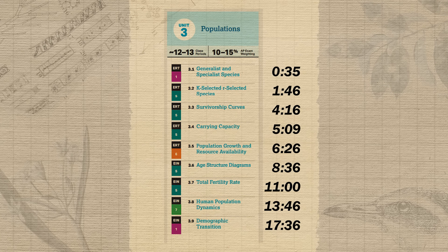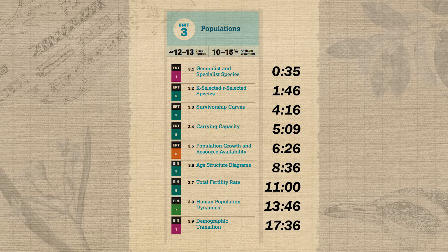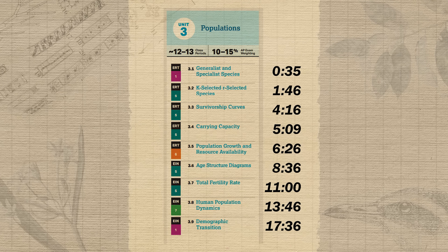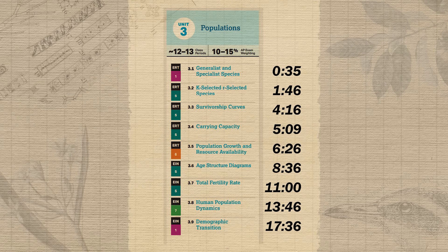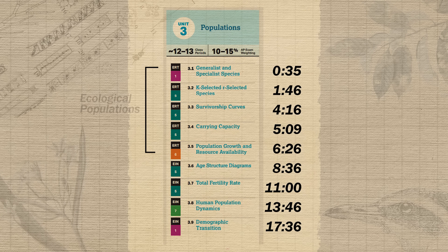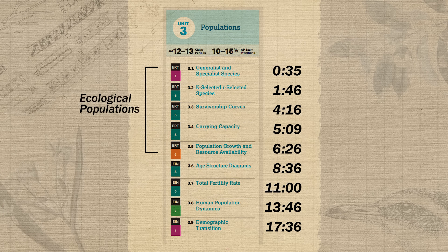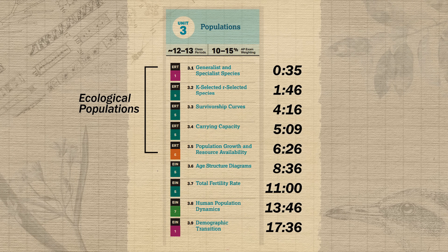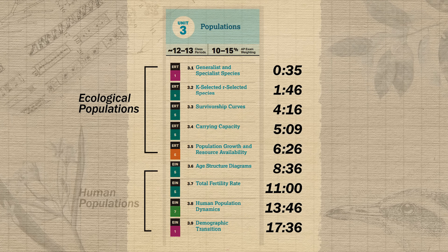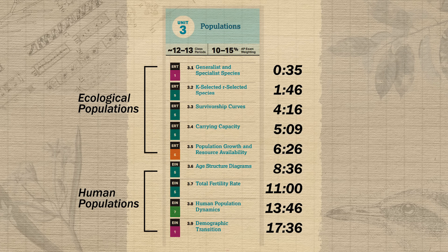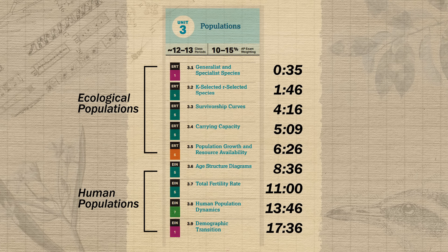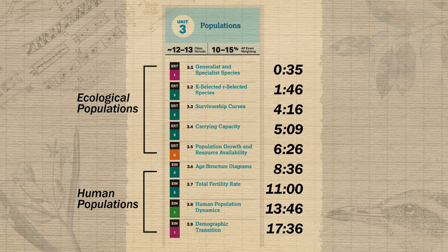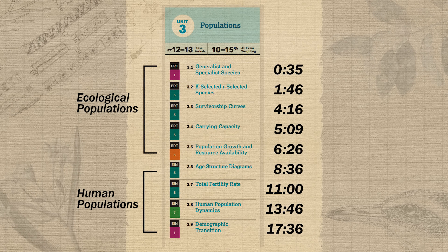Unit 3 is an interesting one because it's going to cover populations both from a human standpoint and from a natural ecosystem standpoint. The first five topics in the unit will be focused more on natural population dynamics that we might see in a deer herd, whereas the last four topics in Unit 3 will be focused more on human population dynamics. We have timestamps for each topic on the screen in case you need to jump right to the topic you need to review most.